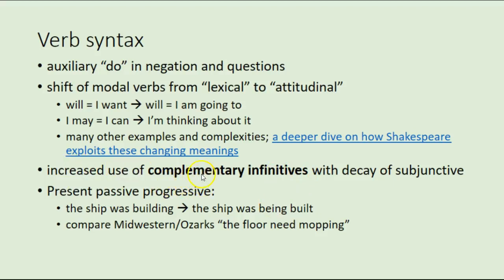We see an increased use of complementary infinitives, and this goes along with the decay of the subjunctive. Whereas in Middle English you would say 'I hope I go' with go in the subjunctive mood, we now say 'I hope to go.' The complementary infinitive is when an infinitive — to think, to sleep, to work — is used as the predicate complement of a verb: I prefer to, I like to, I want to, I hope to, I fear to sleep.